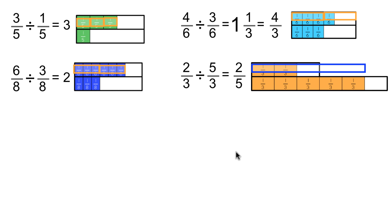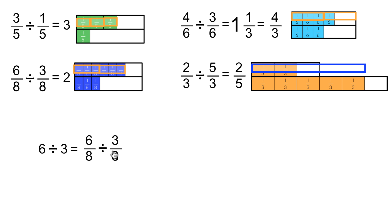Now that we've done these questions, you might ask your students if they see any patterns emerging. You may need to give them a few more examples, but hopefully they will notice that when dividing fractions with a common denominator, there are related questions with the same answer when just dividing whole numbers. That is, 3 and 1/5 divided by 1/5 is the same as 3 divided by 1, or 4 and 1/6 divided by 3 and 1/6 is the same as 4 divided by 3.